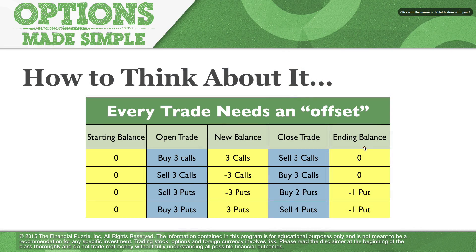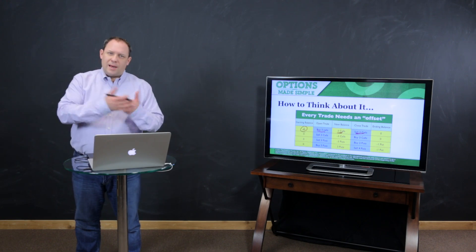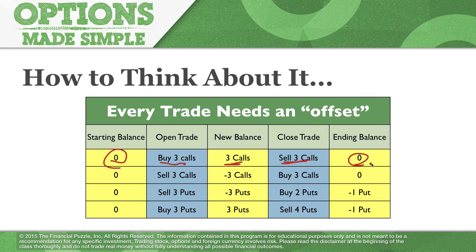Every trade needs an offset, and if you offset more than you initially got into, then you'll just end up with a deficit in the other direction. Let's say your starting balance is zero and you go out and buy three call options — your new balance is three calls. To close the trade, you need to sell the three calls. You buy three calls, you go sell three calls, and now you're back to an ending balance of zero.